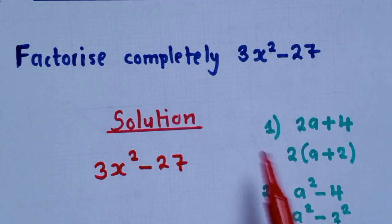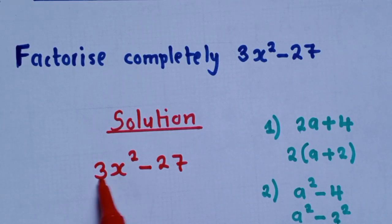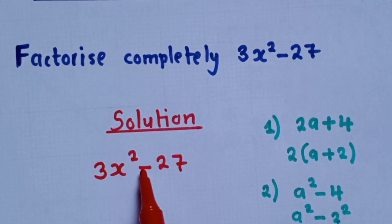So now, we check by applying this idea here. Do we have anything that is common here and here? Yes. A 3 can go into 3x squared, and it can also go into 27 or negative 27.